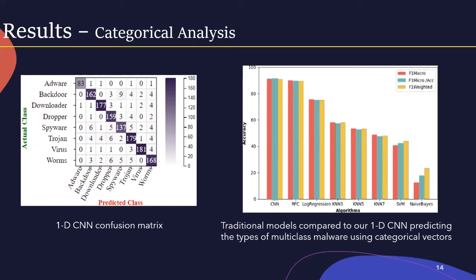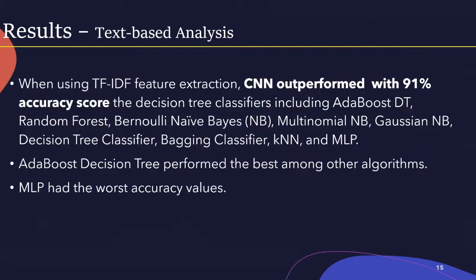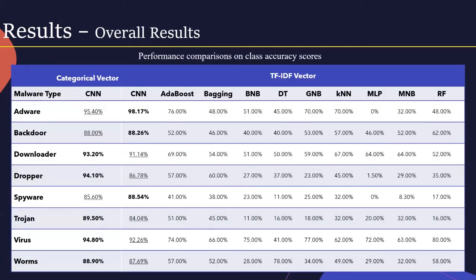The confusion matrix for CNN shows that each malware type has high true positives. When using TF-IDF feature extraction, CNN outperformed other methods with 91% accuracy, with the AdaBoost decision tree classifier performing best among the other algorithms, and multilayer perceptron having the worst accuracy score. This table presents the overall comparison in terms of class accuracy for the two approaches. When comparing CNN with TF-IDF vectors versus categorical vectors, the highest class accuracy varies depending on the type of malware. The highest accuracy scores are highlighted in bold, and the second-best scores are underlined for each malware type.